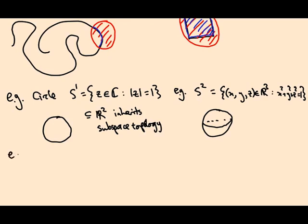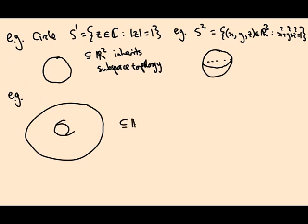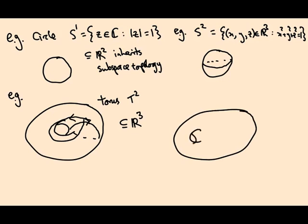Another famous example of a topological space is the torus, or donut, which is again a subset of R3 and inherits a topology. When I say torus, I only mean the surface — the inside where the jam would go is not part of the torus; that would be a solid torus. This is called T2 because it's two-dimensional: it has two coordinates, the longitude and the latitude. Any surface you care to draw — a genus-two surface, for instance — has a topology coming from R3.